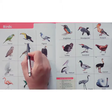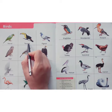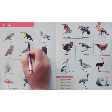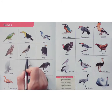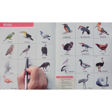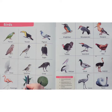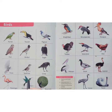Now this is toucan. And this is bulbul. This is bulbul. And this is sparrow. And this is hummingbird.